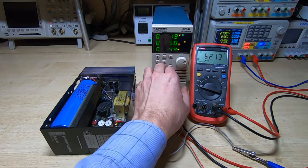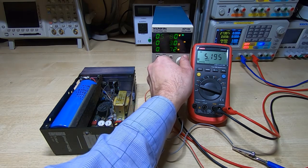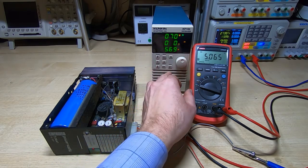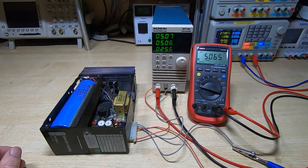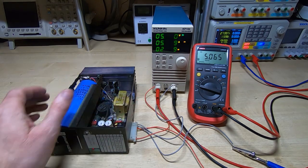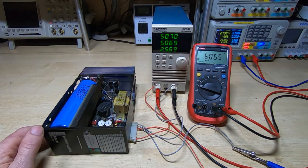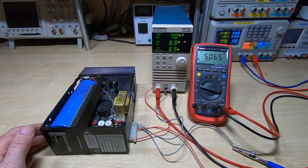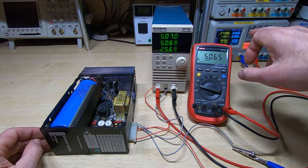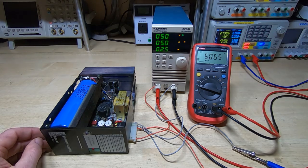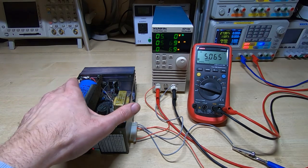Now I'm going to reduce the resistance still further. We'll increase the load and we're now up to 5 amps. So we're putting out 5 amps at 5 volts. You can see we're getting much closer to 5 volts now.